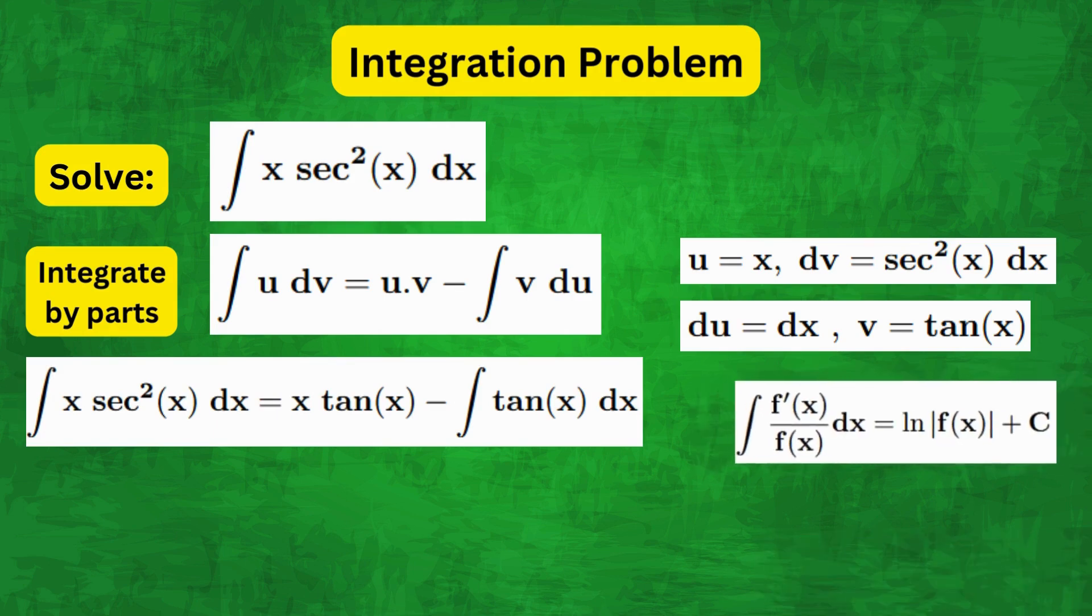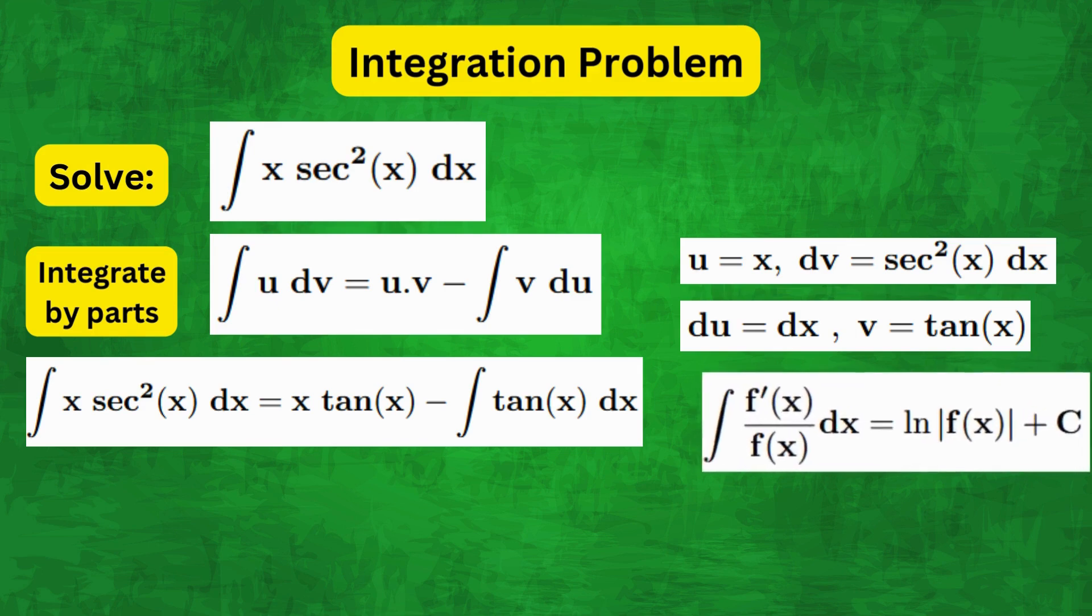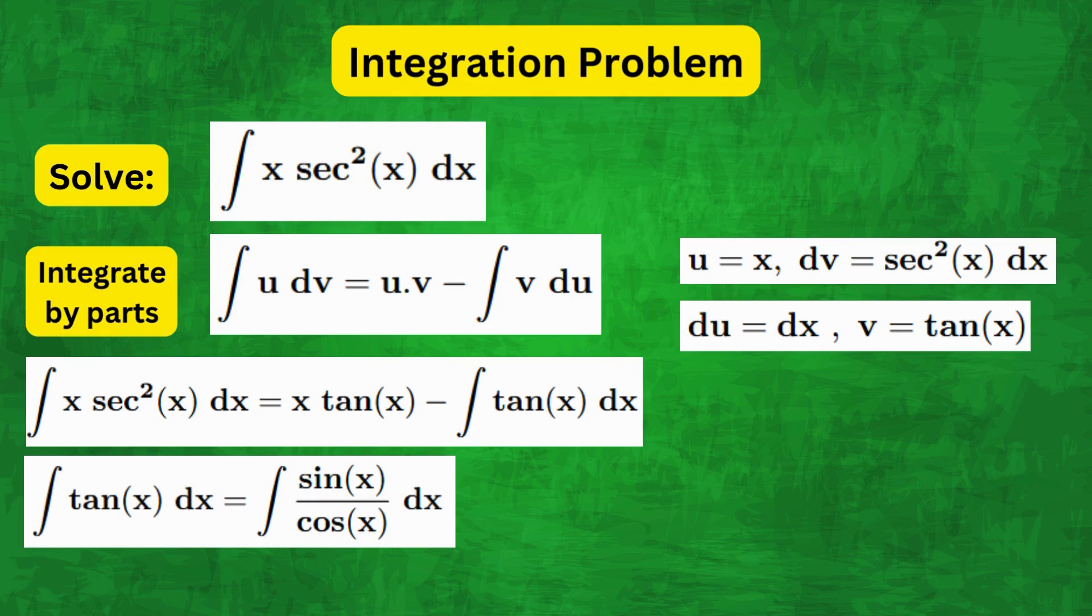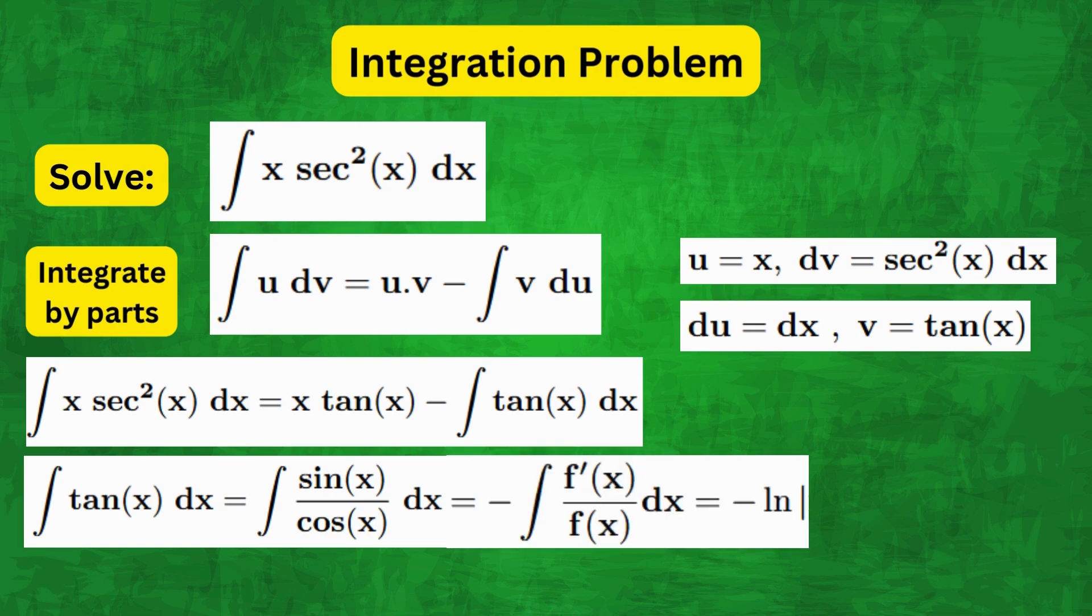Now we will use the very useful log trick to integrate tan(x). Notice that we can write ∫tan(x) dx as ∫sin(x)/cos(x) dx. And since the derivative of cos(x) is -sin(x), this can be written in the form -∫f'(x)/f(x) dx, which we know is equal to ln|f(x)| + C.